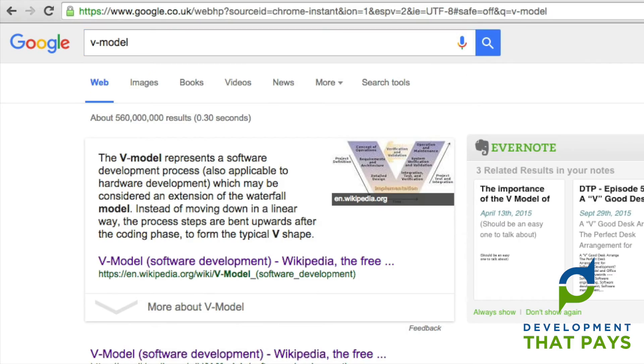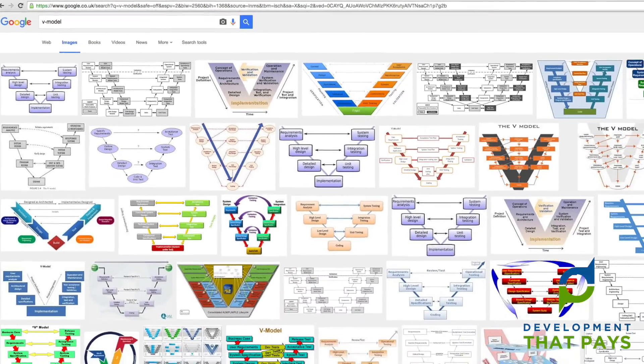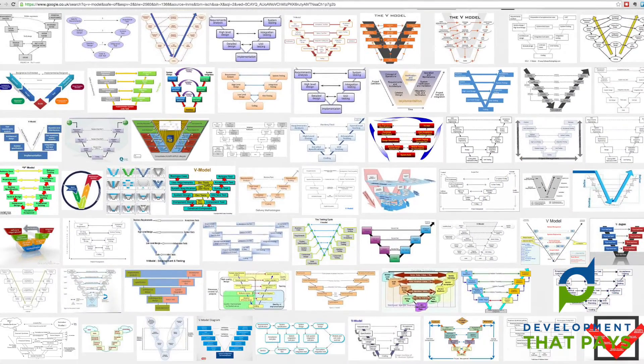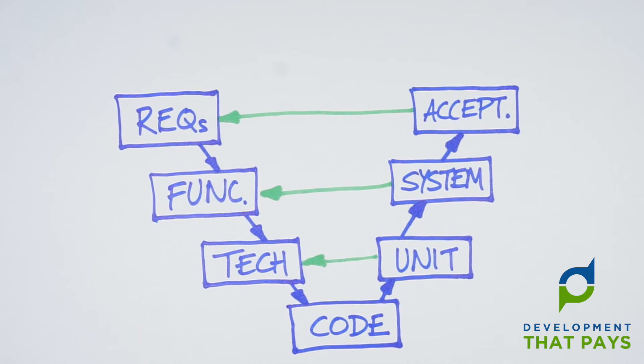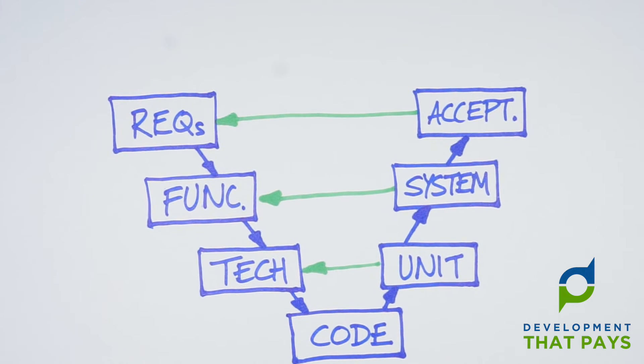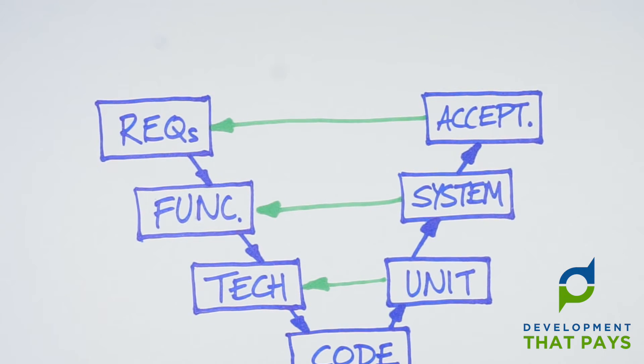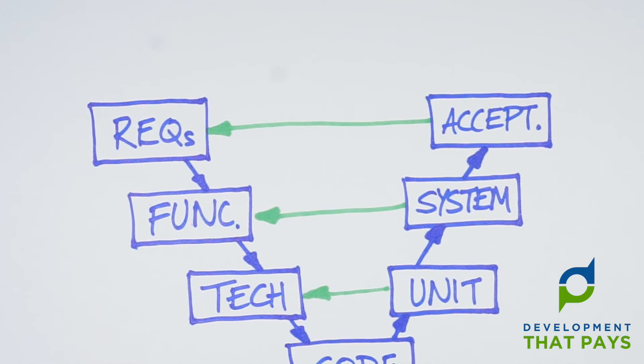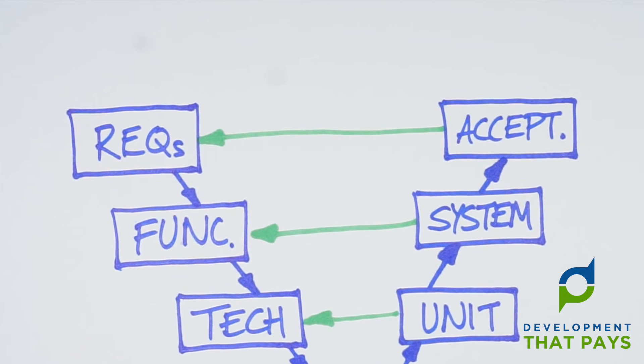A search for V-Model brings up no shortage of variations on this theme. But what most of them have in common is that they start at the top here with something that is requirements definition or some very close analogue of that. And on the right hand side here, Acceptance Testing, User Acceptance Testing, or again something quite like that.